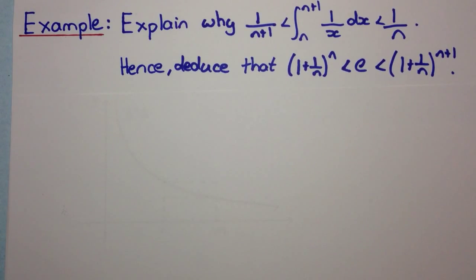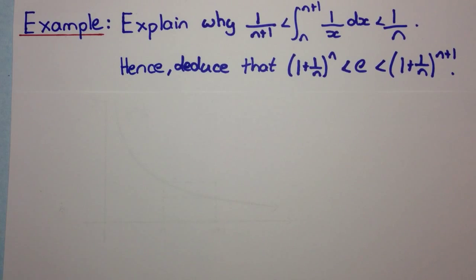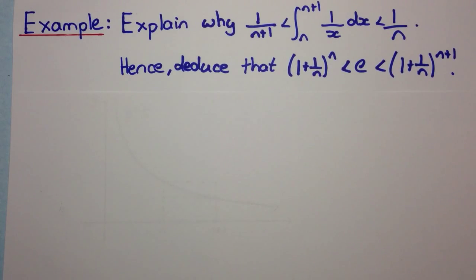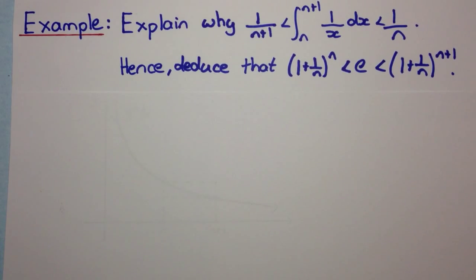Welcome to today's video. Today we're going to be seeing a harder Extension 1 type question. The question says: explain why 1 over n+1 is less than the integral from n to n+1 of 1 over x dx, which is less than 1 over n. Hence, deduce that (1 + 1/n)^n is less than e, which is less than (1 + 1/n)^(n+1).